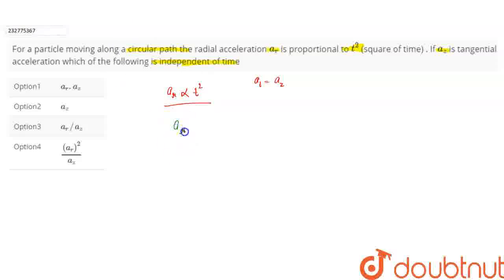This proportionality sign can be replaced with a constant. Let's say c. So we can write AR is equal to c t square. We replaced the proportionality sign with equal to and added a constant.